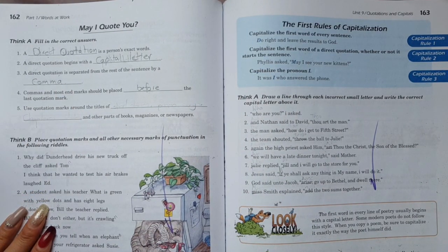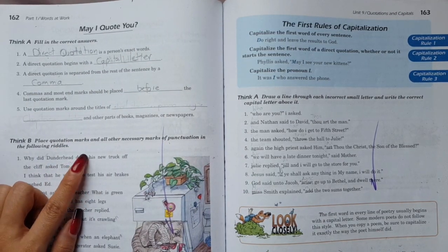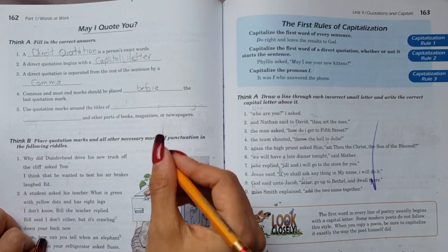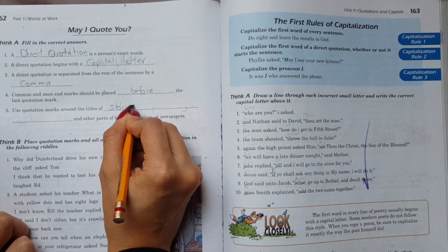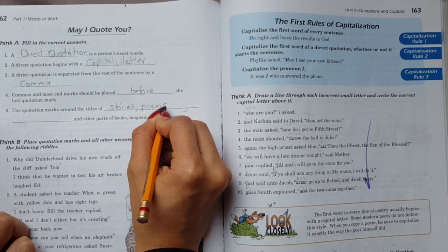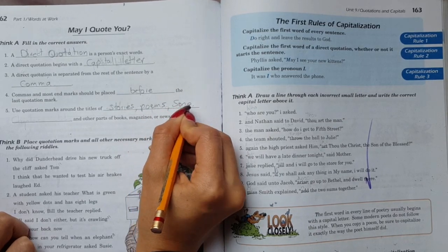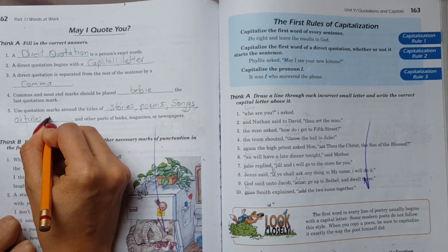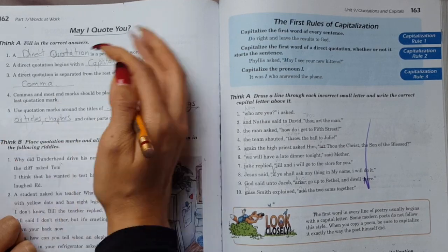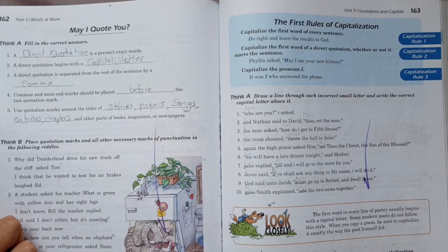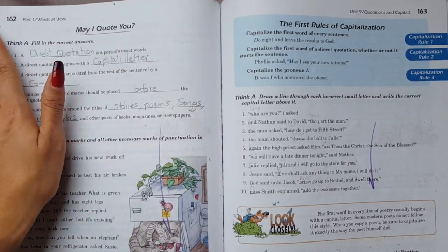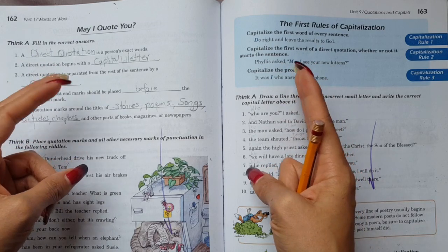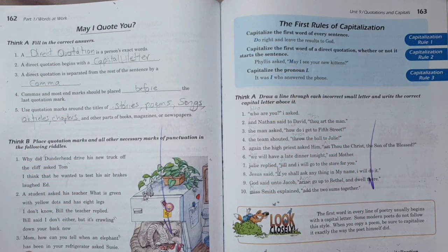Number five, use quotation marks around the titles of - around what titles should I put quotation marks? What kind of titles? Stories, remember, poems, songs, articles, or chapters, and other parts of books, magazines, and newspapers.